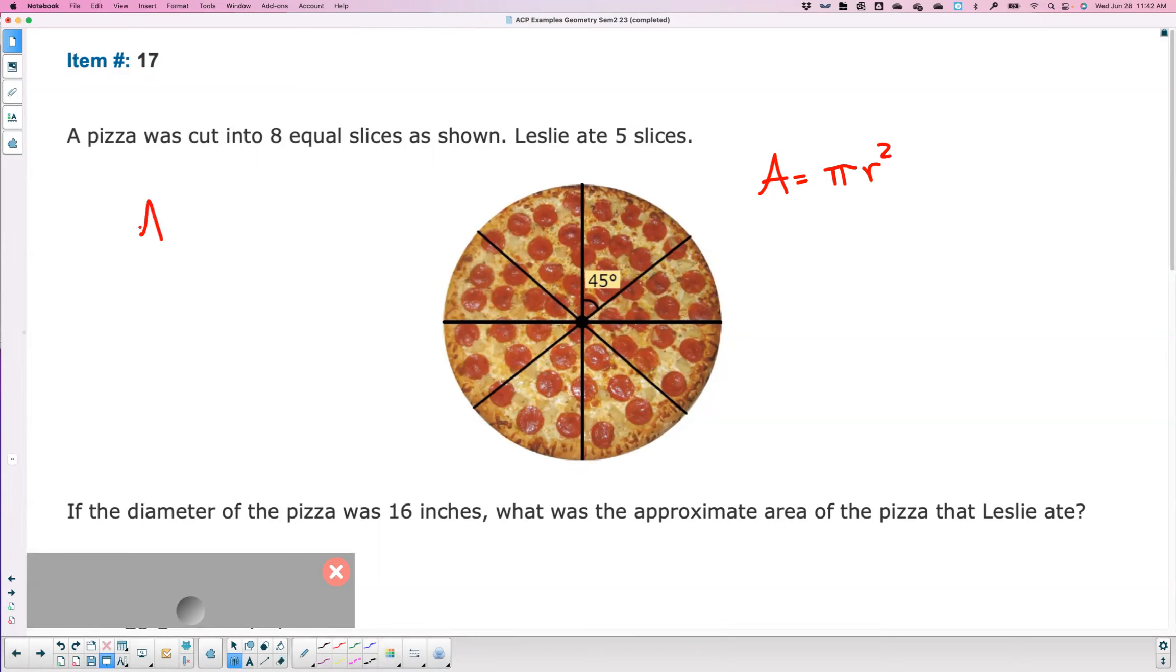So you could use the sector formula, which they listed as x over 360 times pi r squared. But many of you guys do it a different way and I like their way the best. So I'm going to use this formula. So we plug it in.